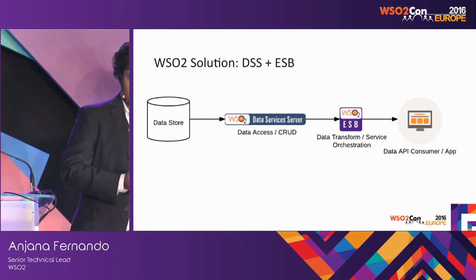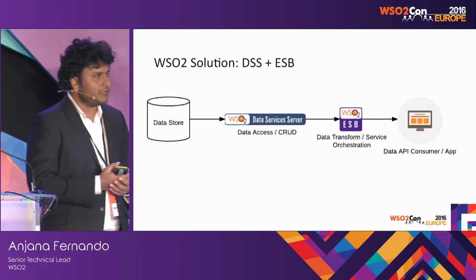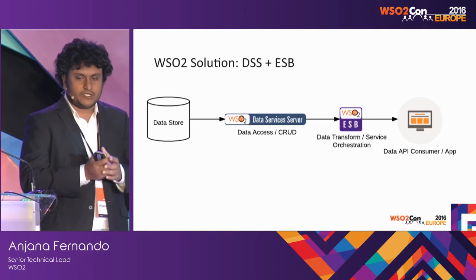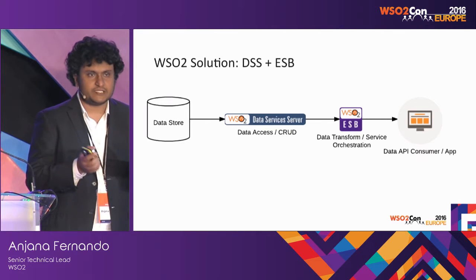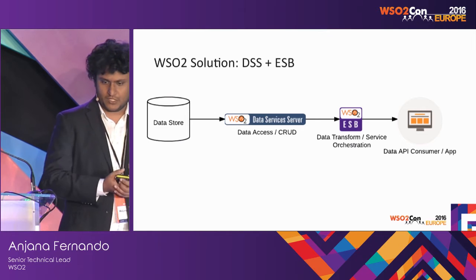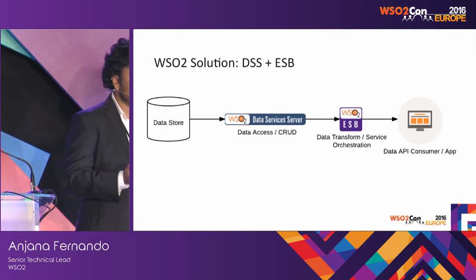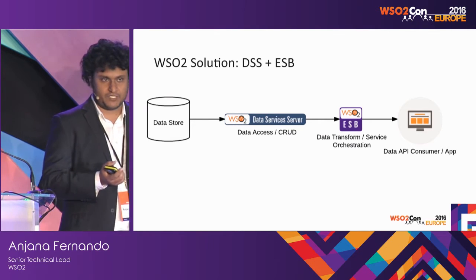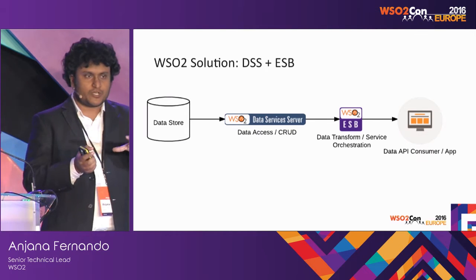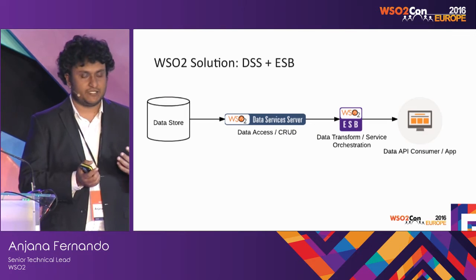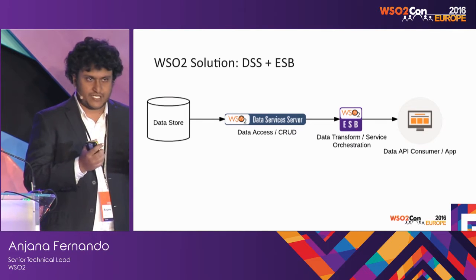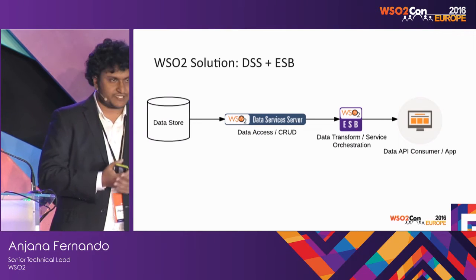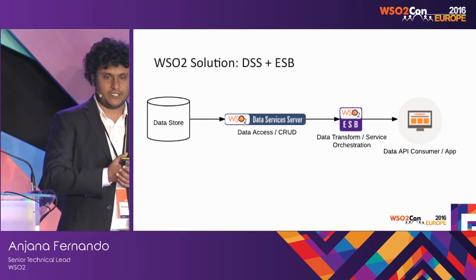What's the current solution we have? At the moment, we have the WSO2 Data Services Server and the ESB. Usually we make scenarios using both of these products. Data Services Server is usually used to do straightforward operations — like if you want to access some data from somewhere, you put a Data Services Server, create a service, and access that. The main thing it does is access and manipulate data in a straightforward manner.